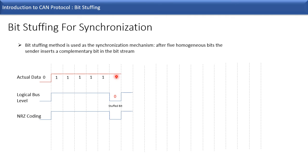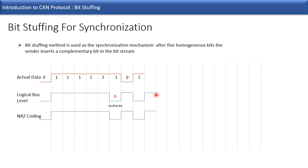The next bit — the sixth consecutive bit — is also high. In the logical bus level, it appears as the seventh bit, because the stuffed bit was inserted before it. In the actual data we then have a logical level zero, which is represented in the bus level and also in the NRZ coding. The next bit is a high level, again represented in the bus level and NRZ coding. Then we have another logical level zero, again represented the same way in bus level and NRZ coding.